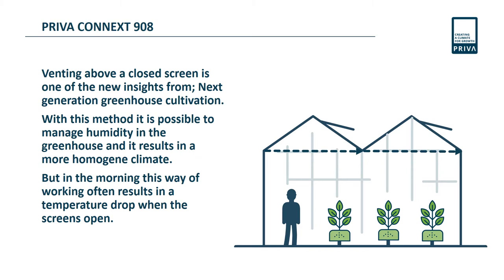One of the new functionalities is venting above a closed screen. This is one of the new insights from the next generation of greenhouse cultivation. With this method, it is possible to manage humidity in the greenhouse and it results in a more homogenous climate.